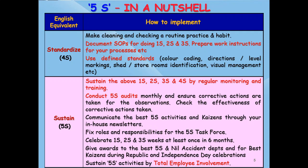Here is a brief description of 5S sustain: sustain 1S to 4S by regular training; conduct 5S audits periodically; communicate best 5S practices to all employees; fix roles and responsibility for the 5S task force. After sustaining 1S to 4S for a period of time — maybe after 1 year — conduct separate 1S, 2S, and 3S week celebrations. Recognize and give rewards to the best 5S maintained and nil accident departments. Also give rewards during Republic and Independence Day celebrations for the best kaizens given by employees, to ensure total employee involvement, making 5S activities a success and a custom and culture in your organization.